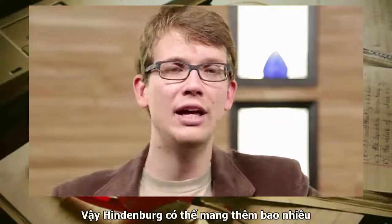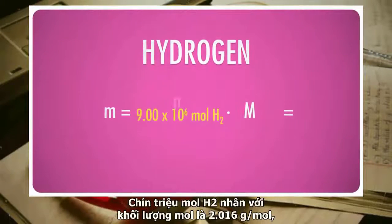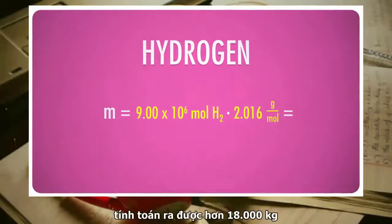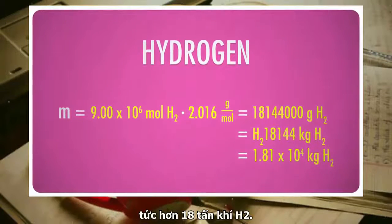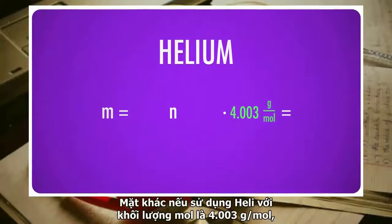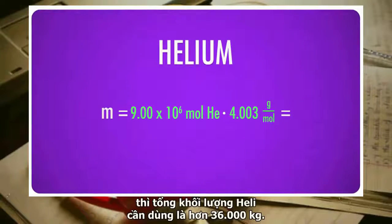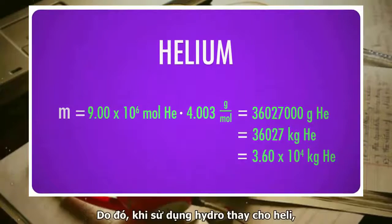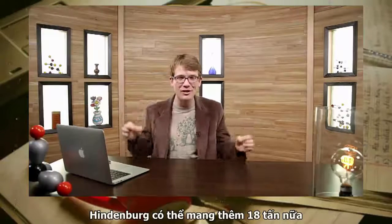So how much extra could the Hindenburg carry because it was using hydrogen instead of helium? 9 million moles of H2 times its molar mass of 2.016 grams per mole calculates to a little over 18,000 kilograms, or 18 metric tons of gas. On the other hand, helium's molar mass is 4.003 grams per mole, so 9 million moles of that would have a total mass of over 36,000 kilograms. So with hydrogen instead of helium, the Hindenburg could carry 18 metric tons more.